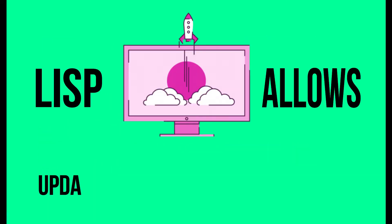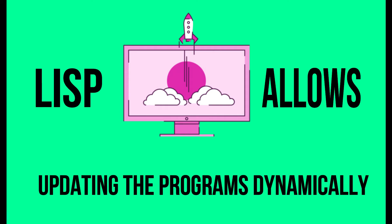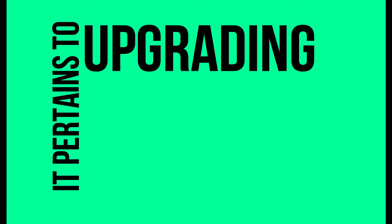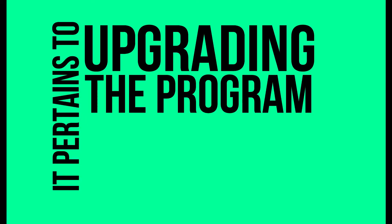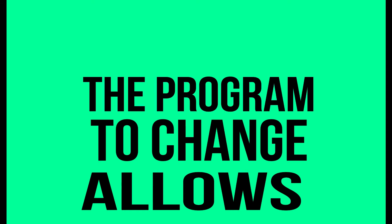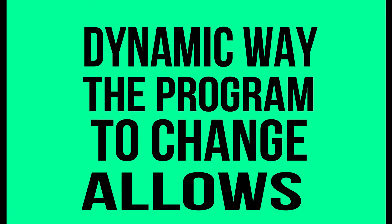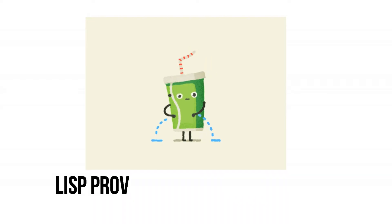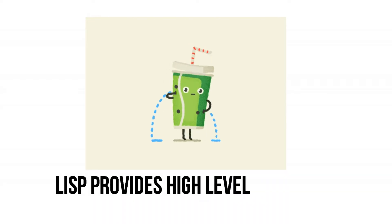Lisp allows updating the programs dynamically. It pertains to upgrading the program while they are running and it allows changing the program in a dynamic way. Lisp also provides high-level debugging.